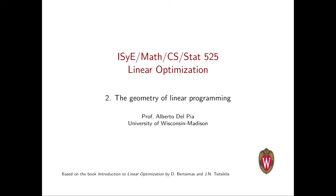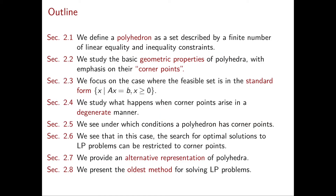In this video we're going to start the second chapter of our course in linear optimization, and in this chapter we're going to discuss the geometry of linear programming. This is the outline of the chapter. The first thing we will be doing is to define what a polyhedron is — the set described by a finite number of linear inequality and equality constraints. Polyhedra correspond to the feasible region of a linear programming problem.